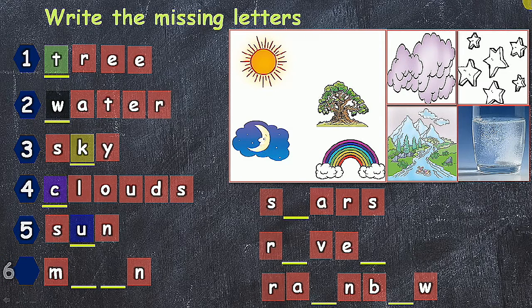And then sixth one, that is moon. In this sixth one, both O and O, both two letters are the missing letters. M-O-O-N, moon.